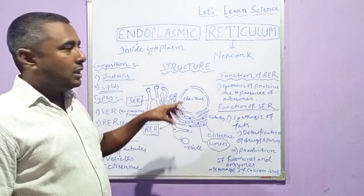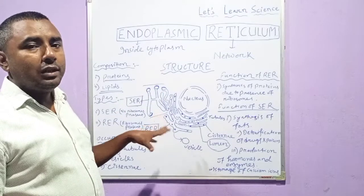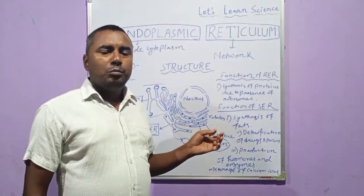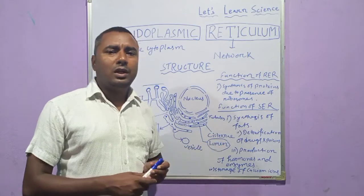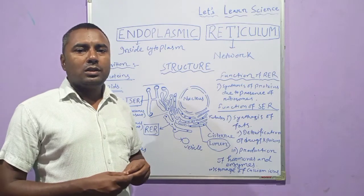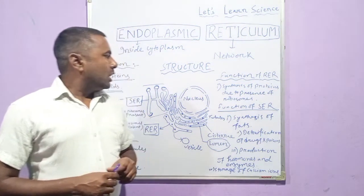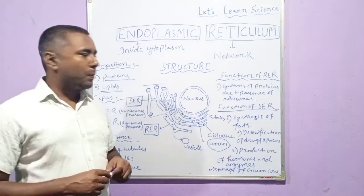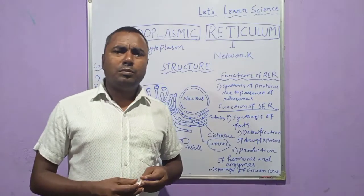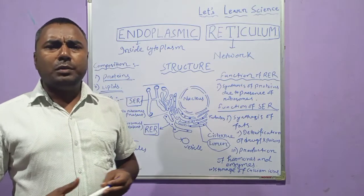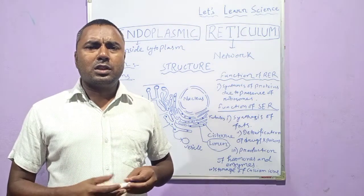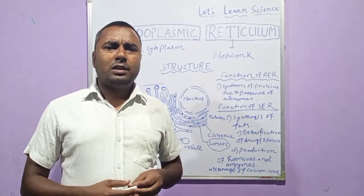These are features of eukaryotic cells, because eukaryotic cells only possess membrane-bound cell organelles. In prokaryotic cells, membrane-bound cell organelles are absent. I hope you understood the session. If you have any doubt or confusion, please comment in the comment section. If you liked the video, please subscribe to the channel and share it. Thank you.